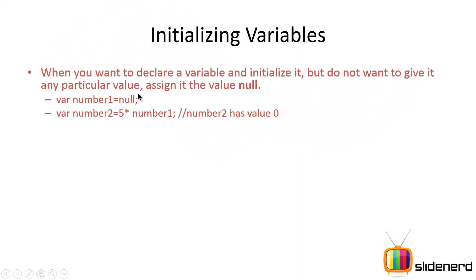Let's talk about initializing variables. To create a variable in memory, you use the keyword var, which tells your JavaScript interpreter to create this value, store it in memory, and refer to it using this variable name. Now, if you say var number1 equals null — why would you do that? If you're not giving any particular value to a variable that you just initialized, then always give it null. It's a standard, recommended practice. The program will work even if you just say var number1 and semicolon, however the recommended idea is that you give it null values.